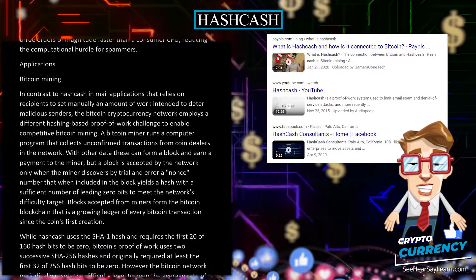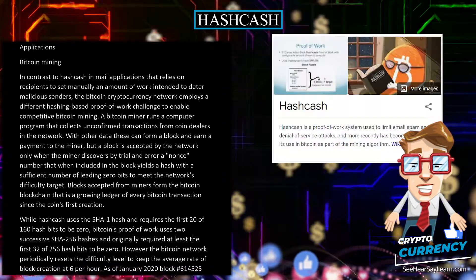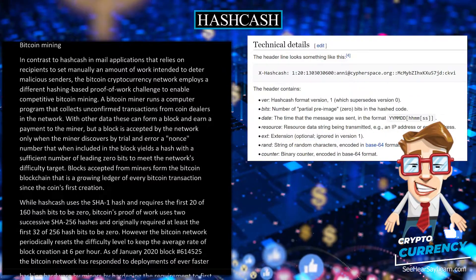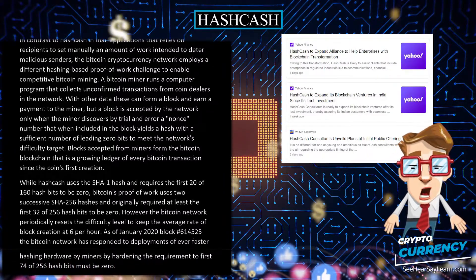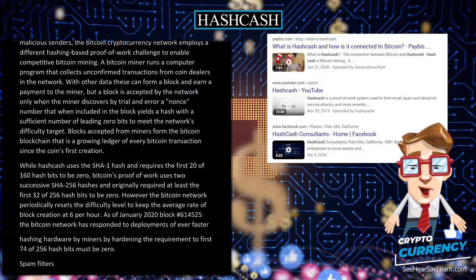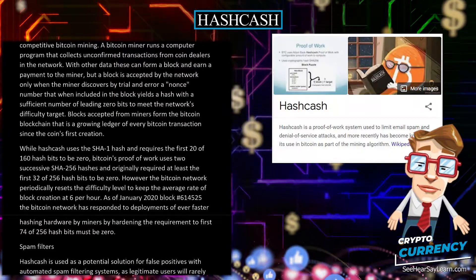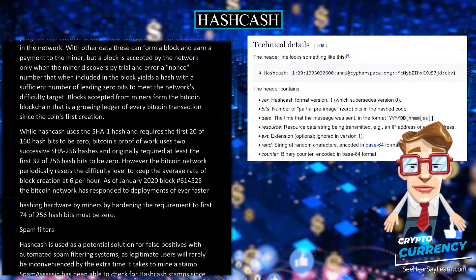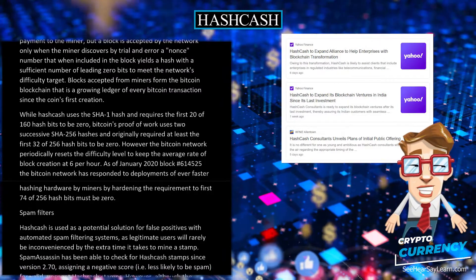While hashcash uses the SHA1 hash and requires the first 20 of 160 hash bits to be 0, Bitcoin's proof-of-work uses two successive SHA256 hashes and originally required at least the first 32 of 256 hash bits to be 0. However, the Bitcoin network periodically resets the difficulty level to keep the average rate of block creation at 6 per hour. As of January 2020, block number 614525, the Bitcoin network has responded to deployments of ever faster hashing hardware by miners by hardening the requirement so the first 74 of 256 hash bits must be 0.